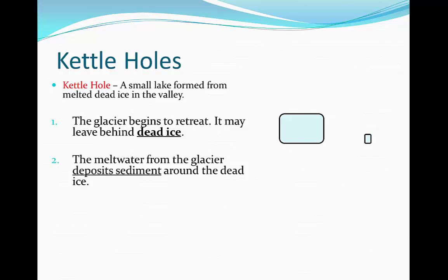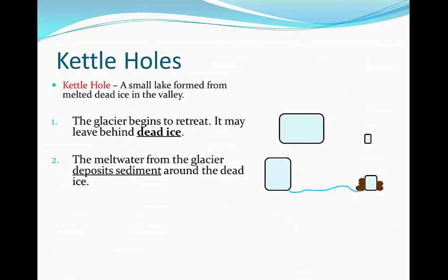The meltwater from the glacier begins to deposit sediment around the dead ice. So the larger valley begins to retreat and as it does so, the meltwater deposits sediment around this piece of dead ice.